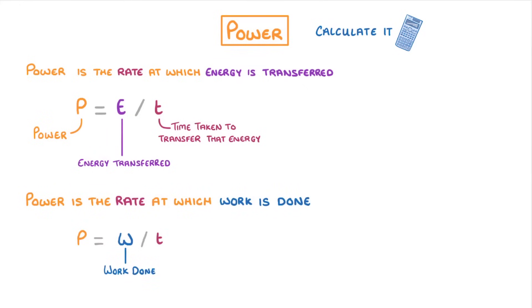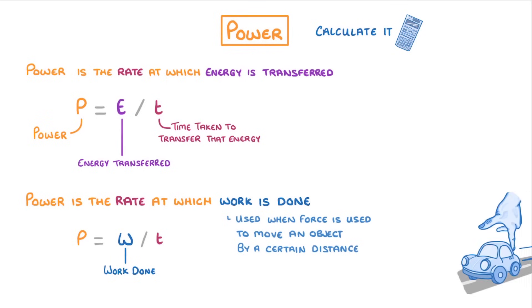Now the term work done can be a bit confusing, but basically it's just a special measure of the energy transferred, and is used when a force is used to move an object by a certain distance. For example, if you pushed a car down the road, then the energy that was required would be referred to as the work done, as you moved it a certain distance.